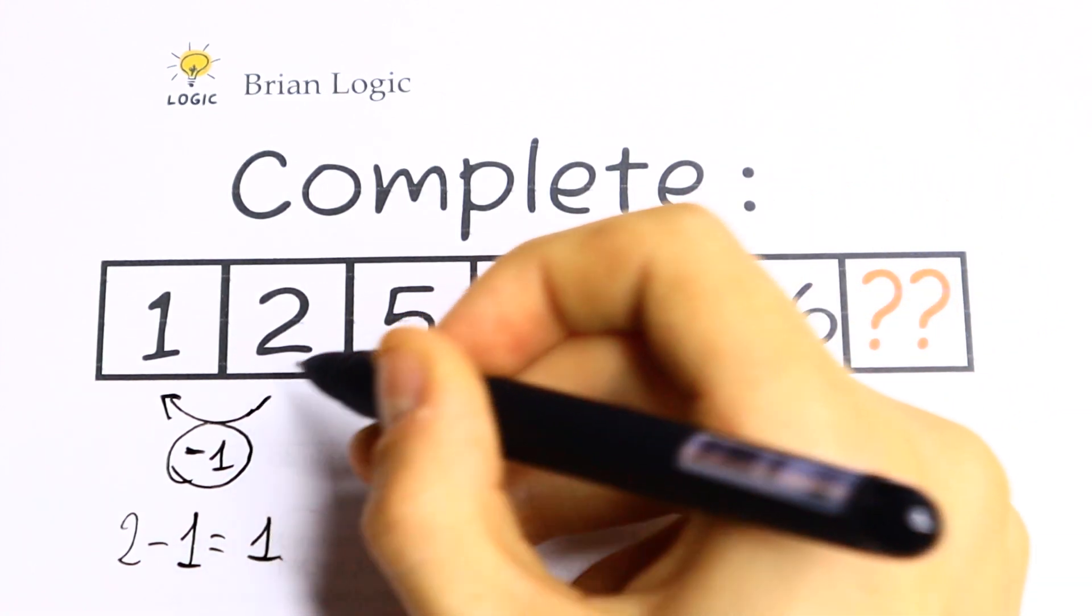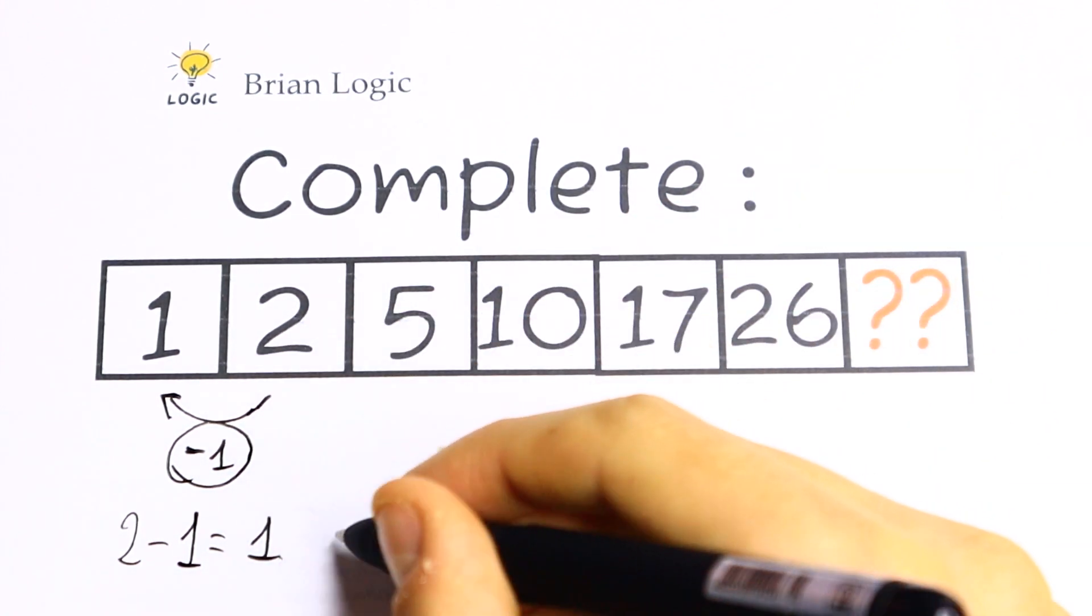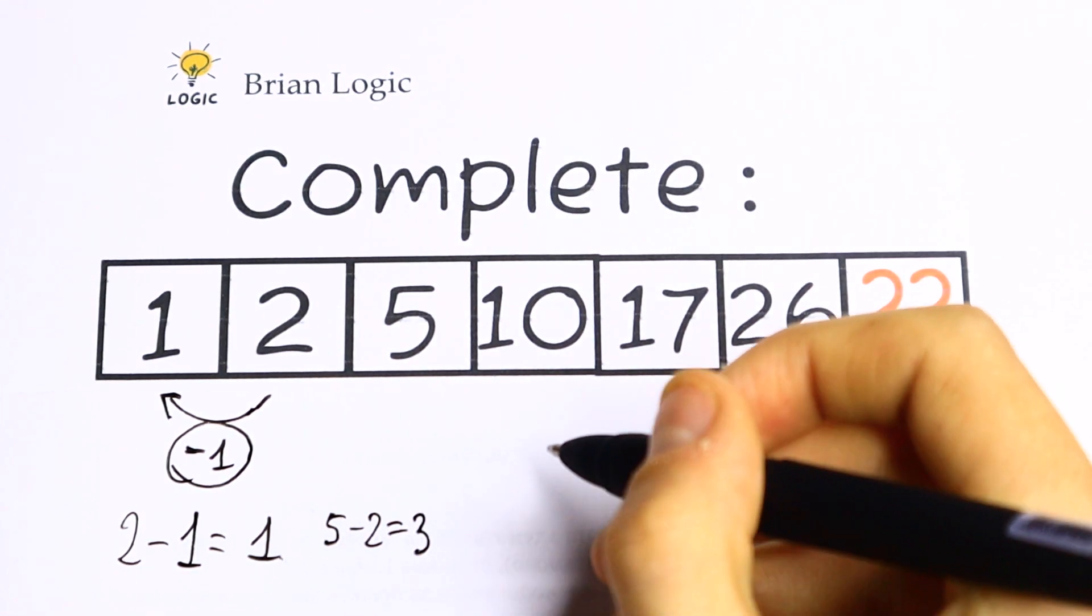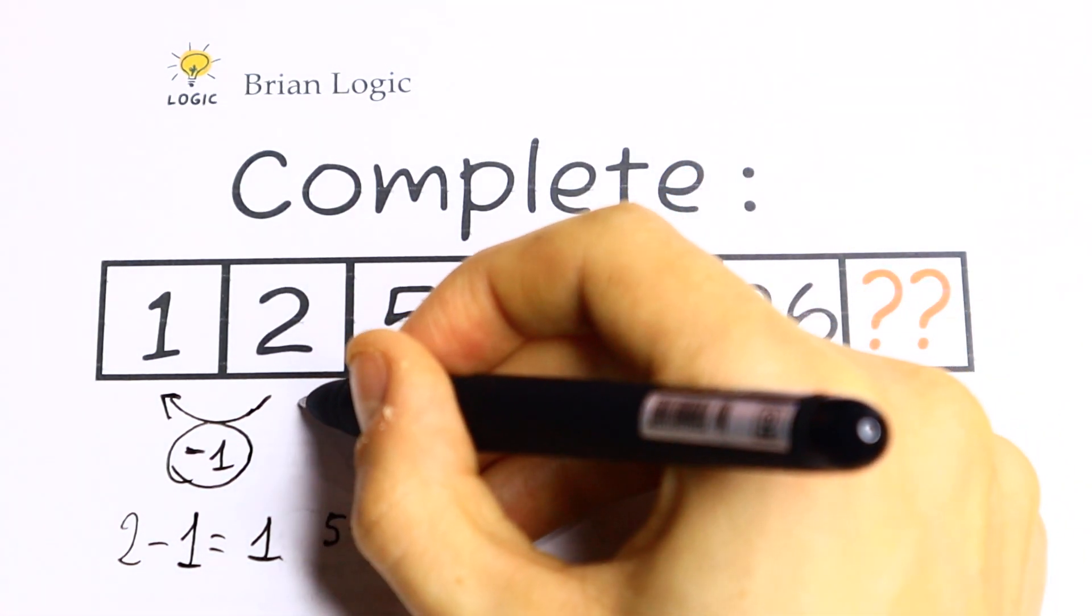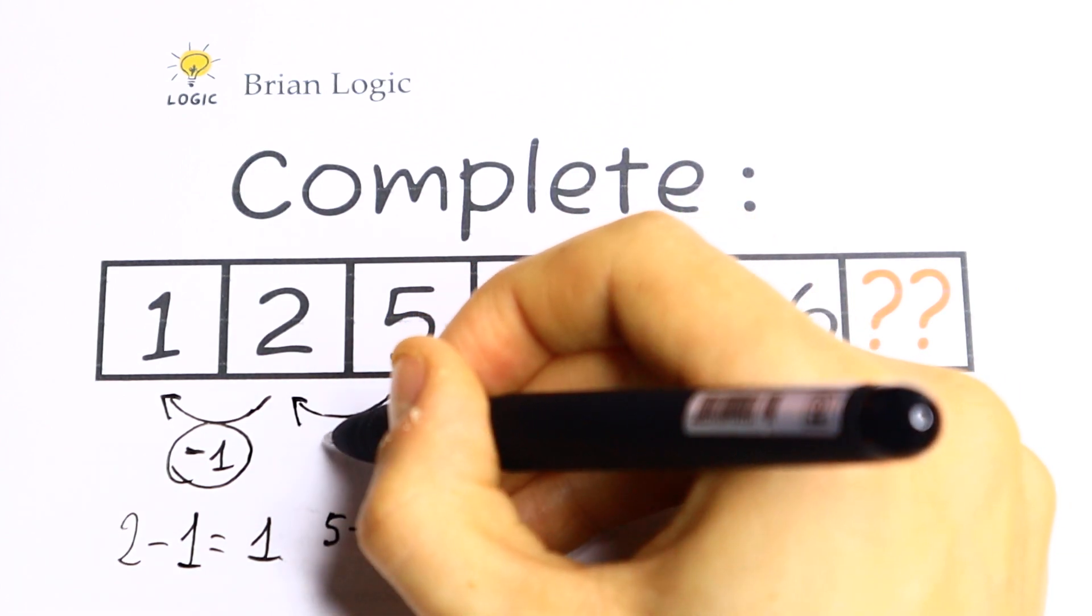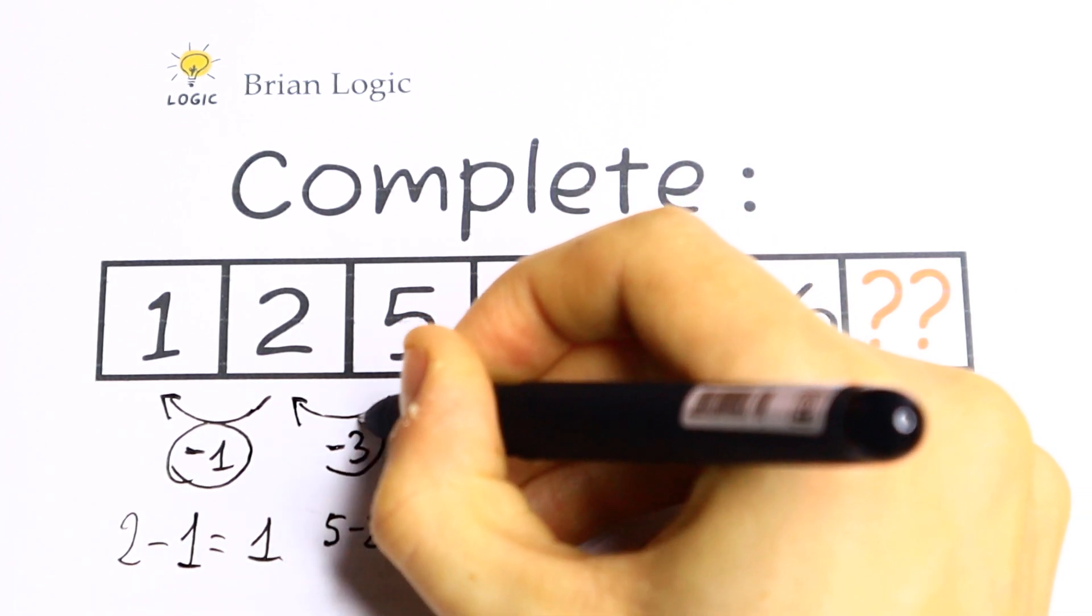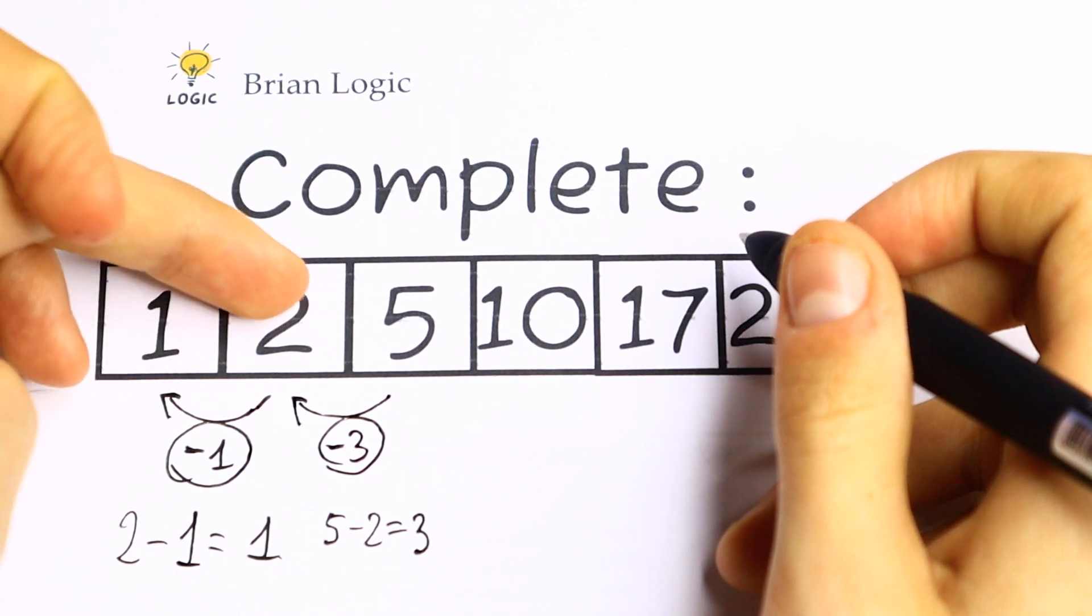Let's use the same logic. Take a look what we will have. 5 minus 2, we will have 3. So as you can see, we need to subtract 3 from this 5 to get the number 2.